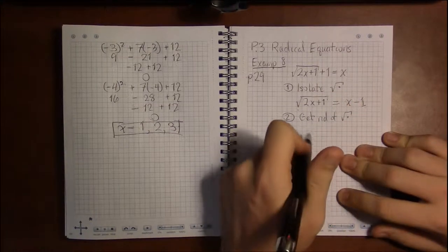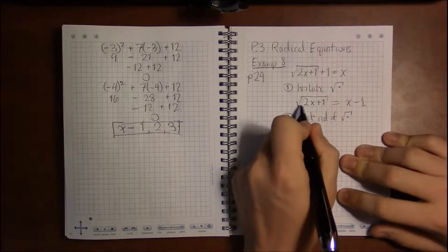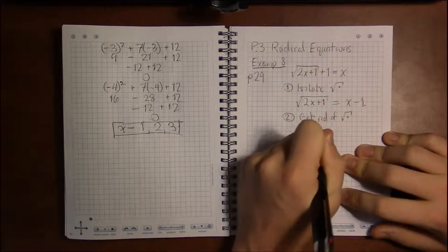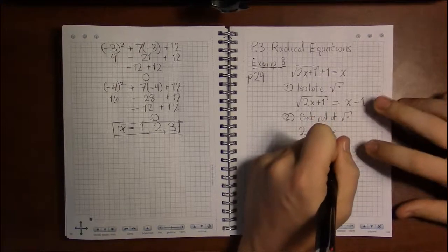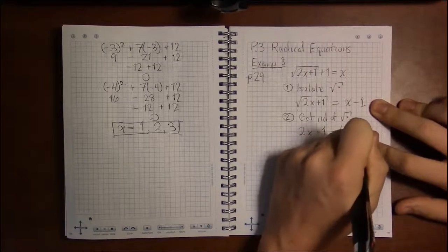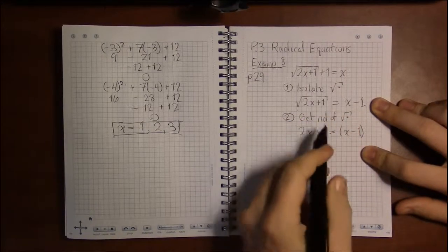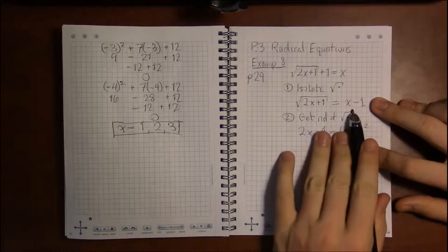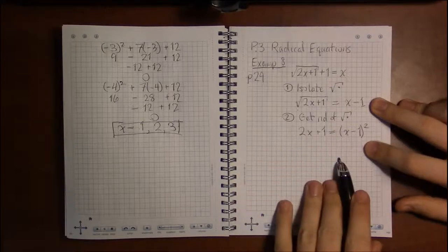So if we square both sides, squaring will get rid of the square root. And then we square the right-hand side. So we square the left, square the right. Squaring the left gets rid of the square root.